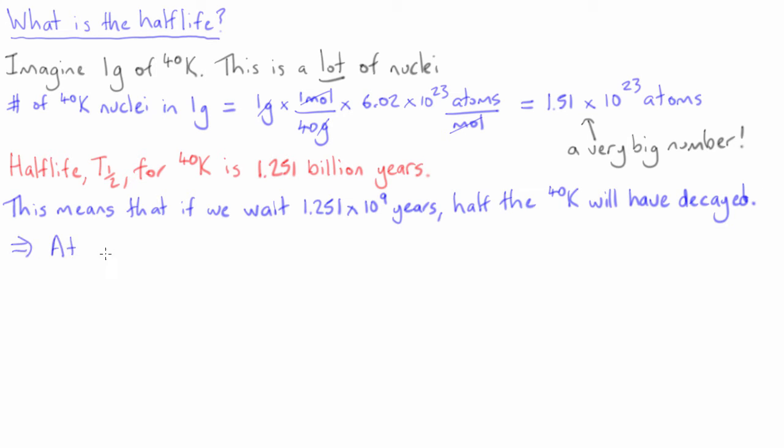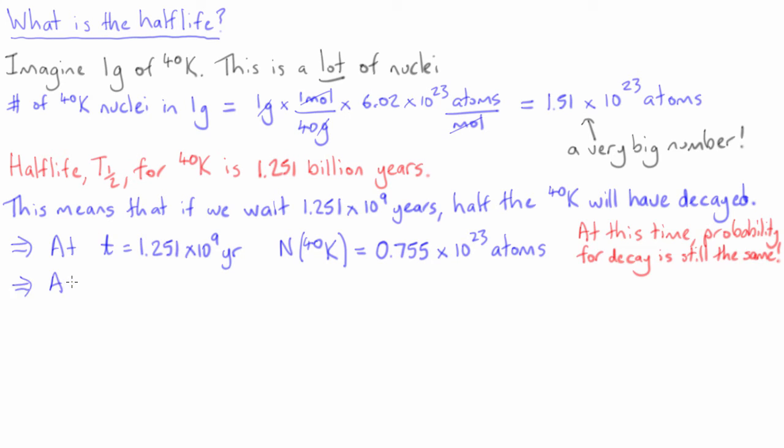So after 1.251 billion years, the number of atoms left will be half that at the start, that is 0.755 times 10 to the 23 atoms. Now remember, even after all this time, the probability of decay remains the same. So after another 1.251 billion years, the number of atoms left will halve again.